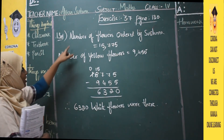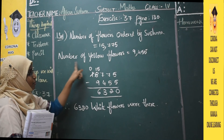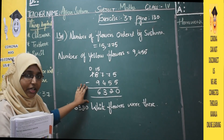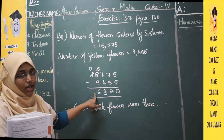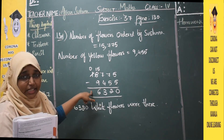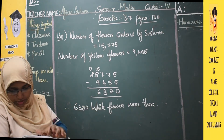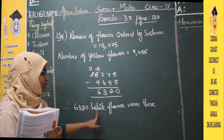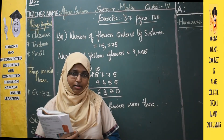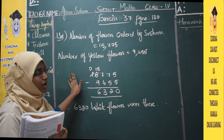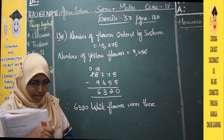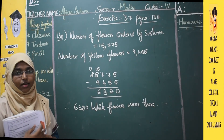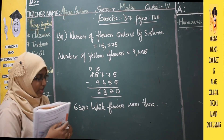Number of flowers ordered by Shushma is 15,775. Number of yellow flowers is 9,455. The remaining — the white flowers — are 6,320. That is what we needed to find. There were 6,320 white flowers. With this we have done question number 1. Let us move to the second question.